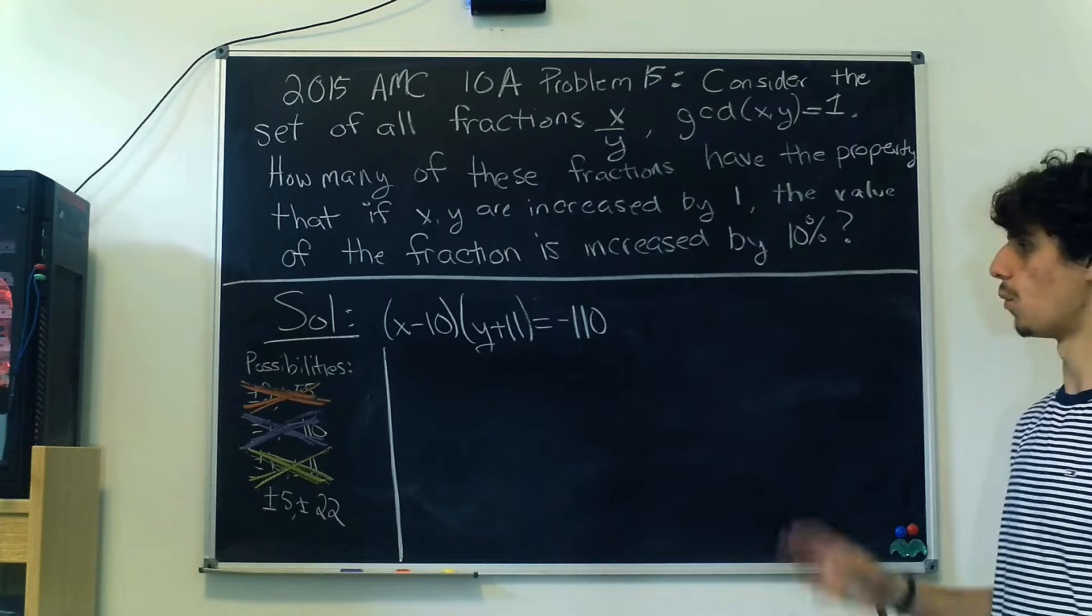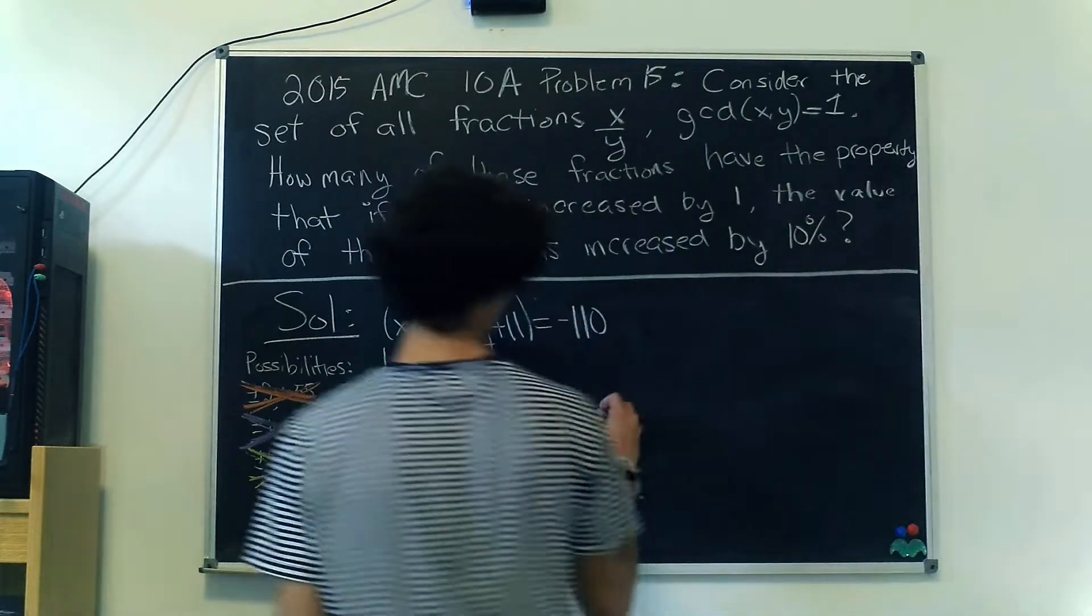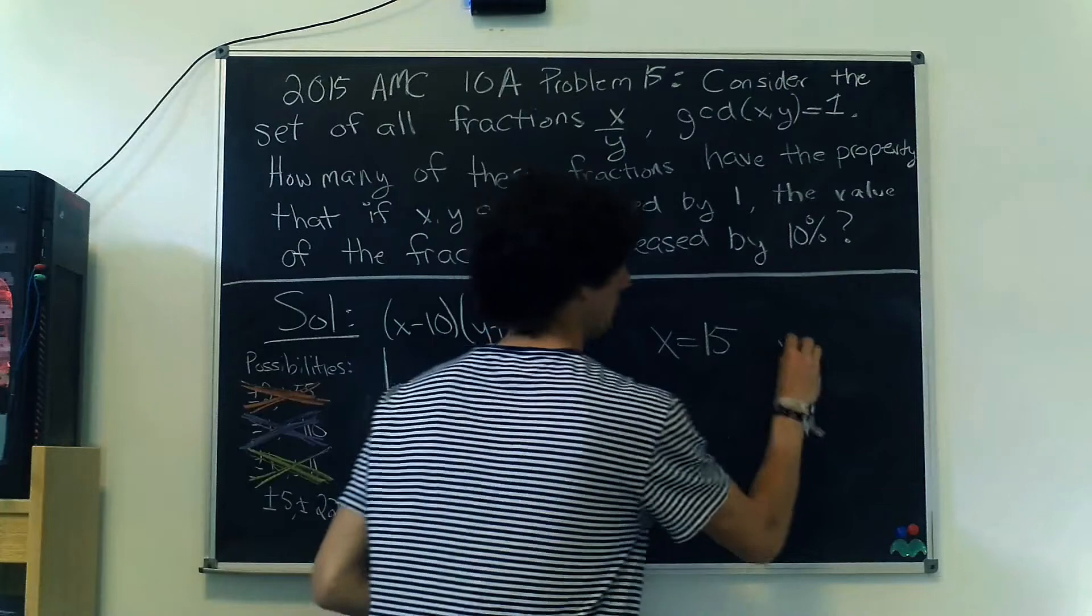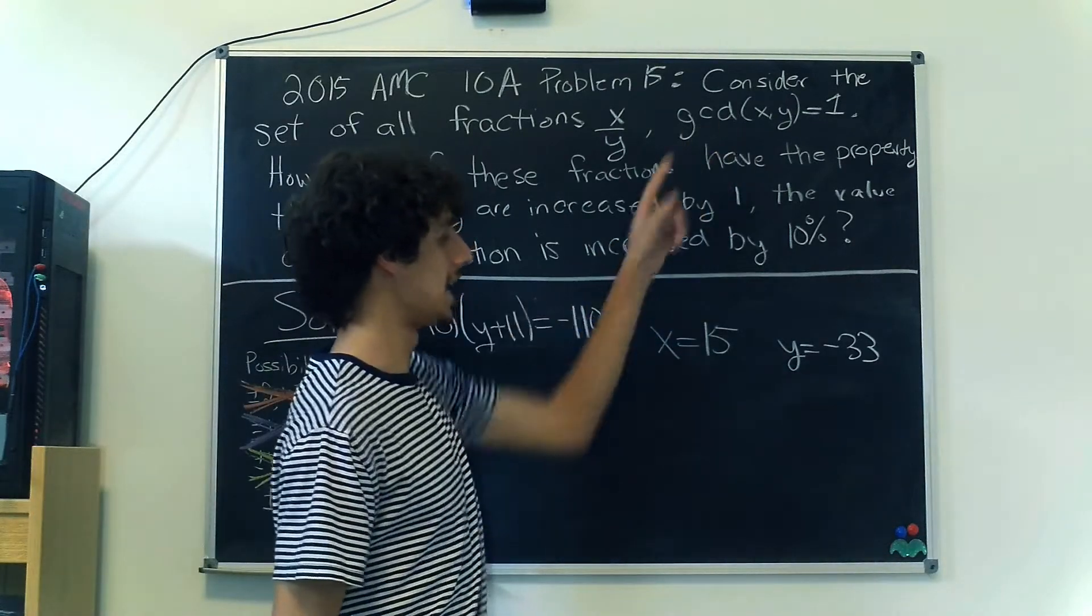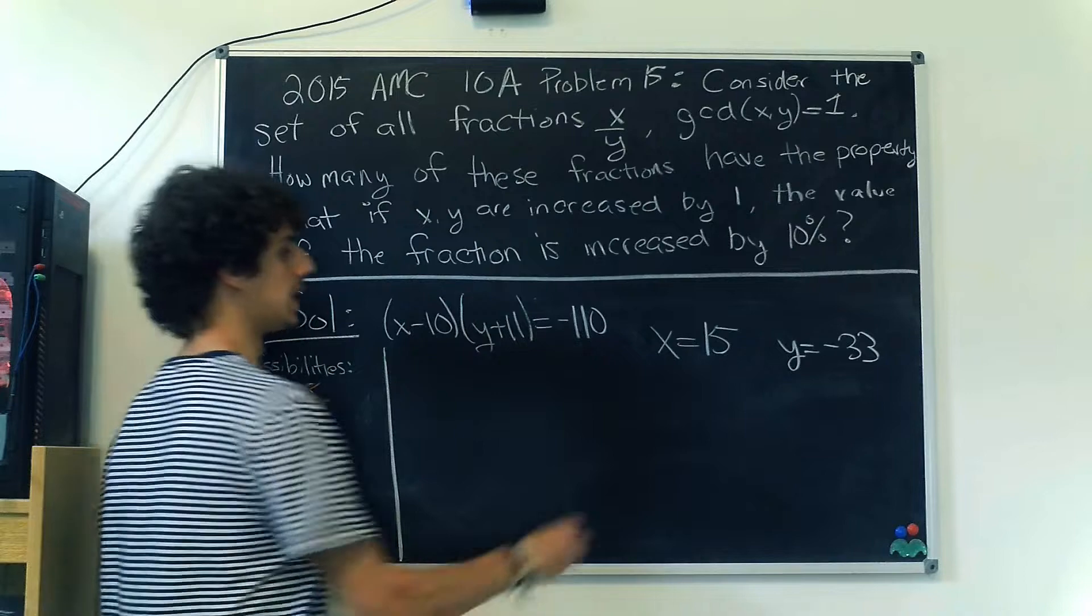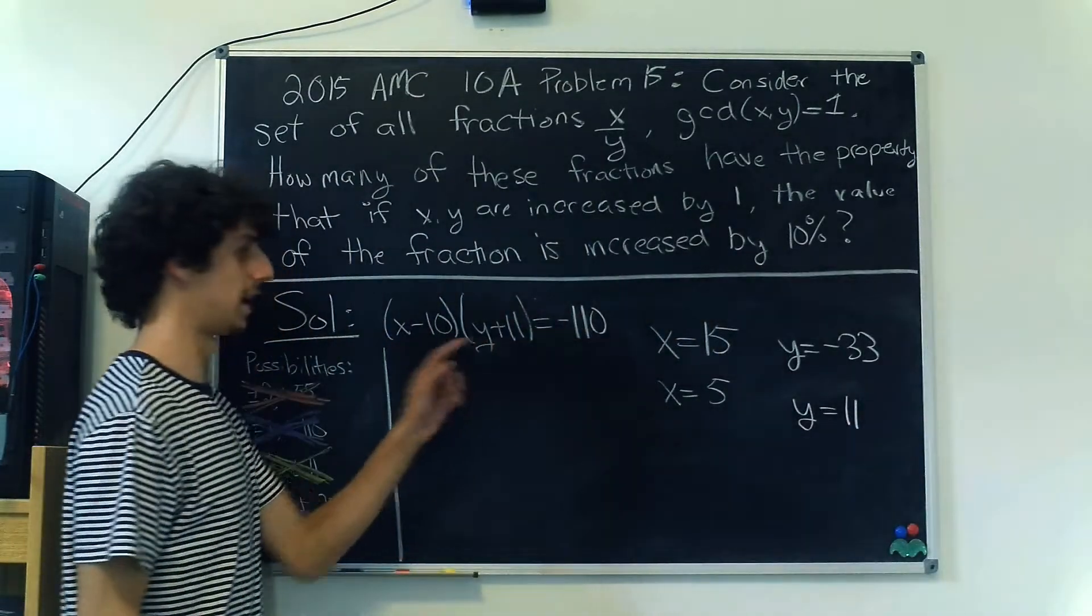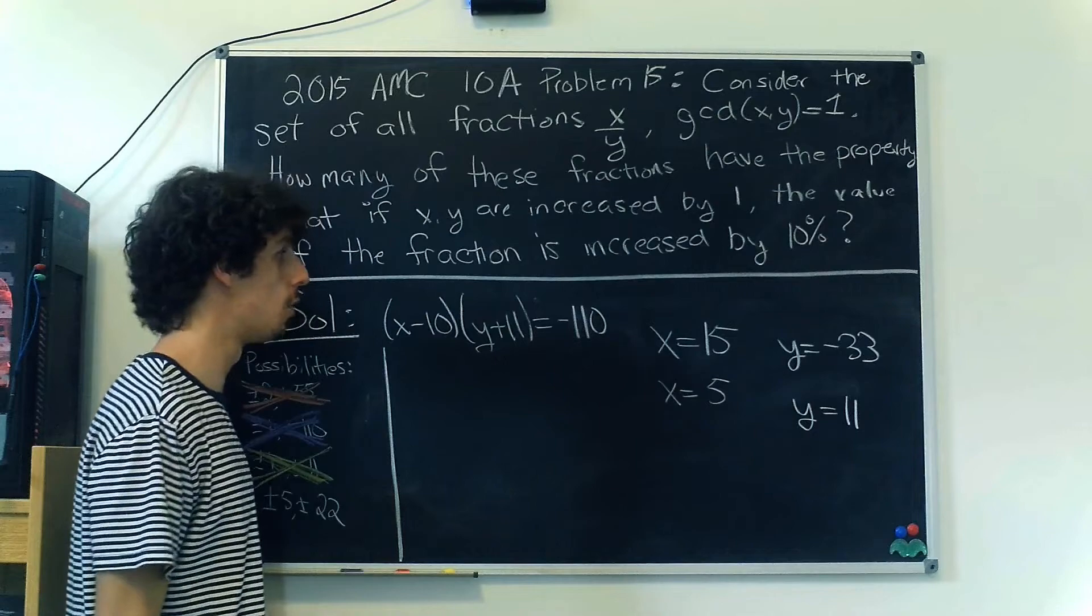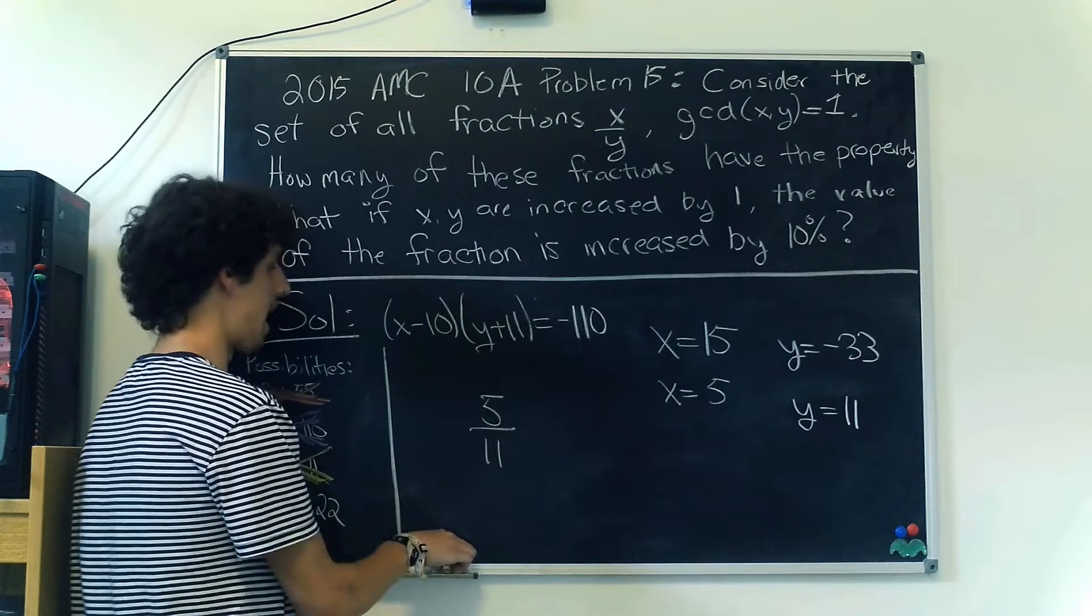Now our goal is to get ±5 on one term and ±22 on the other. We can set x = 15, giving us +5 over here, and y = -33, giving us -22. But both are divisible by 3, so their GCD is not 1. But if we set x = 5, that gives us -5 over here, and y = 11, giving us 22. The resulting combination multiplies to -110, and 5 and 11 are coprime, meaning we have a solution in the form of the fraction 5/11.